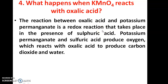The reaction between oxalic acid and potassium permanganate — KMnO4 — is a redox reaction that takes place in the presence of acid media, that is sulfuric acid. Potassium permanganate and sulfuric acid produce oxygen, which reacts with oxalic acid to produce carbon dioxide and water.